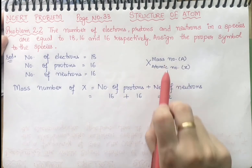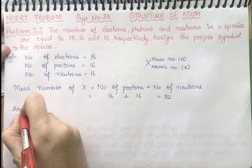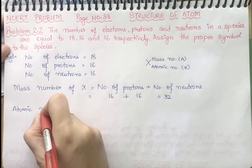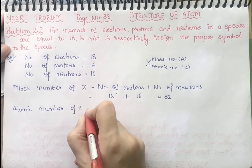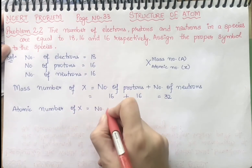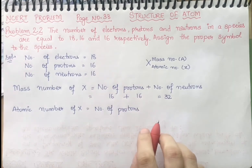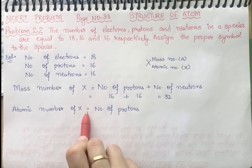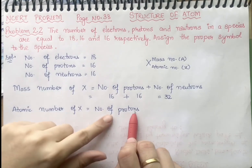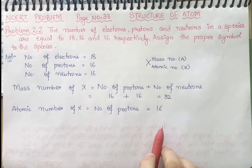Now, atomic number of an element X equals number of protons. If we are talking about a neutral atom, that would apply, but here the number of electrons are more. So the atomic number of element X equals number of protons, which is equal to 16.